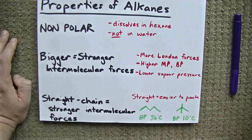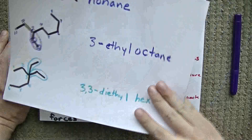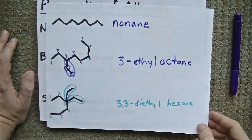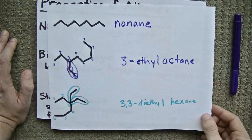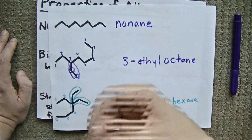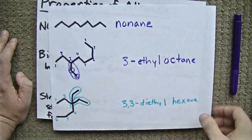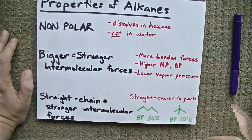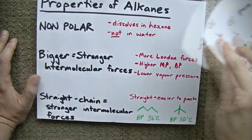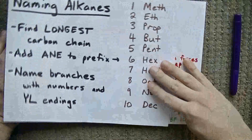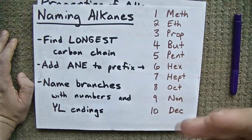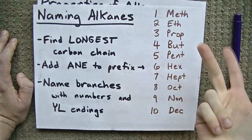That's alkanes for you. My recommendation is to practice your naming, because naming alkanes is one of the building blocks for your organic chemistry career. Be familiar with the properties, and don't forget to memorize the list of prefixes. Best of luck.